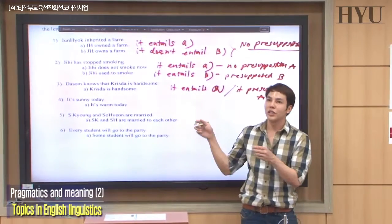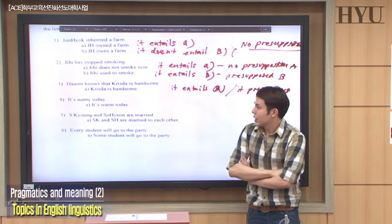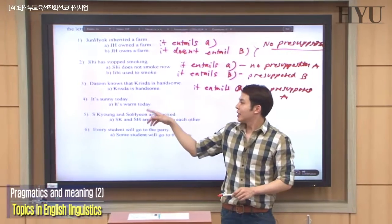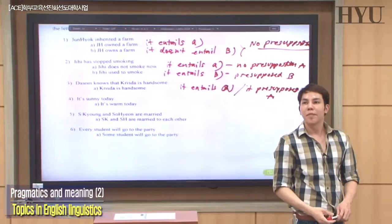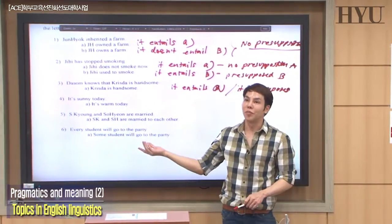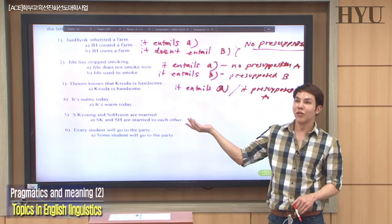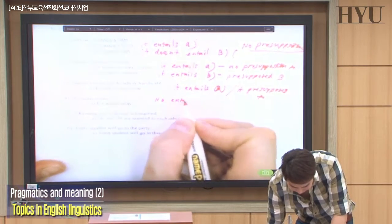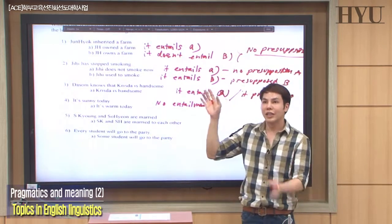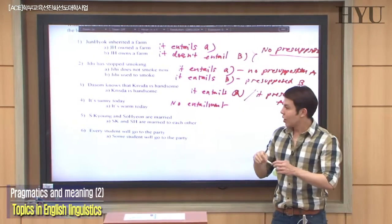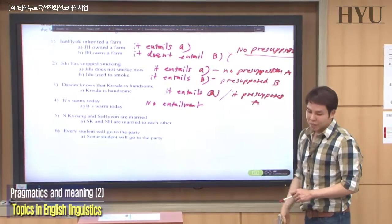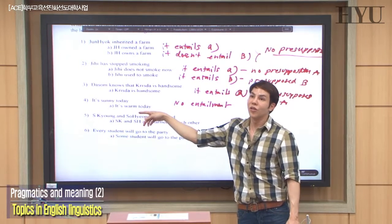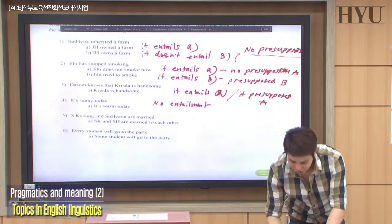Number four: 'It is sunny today.' Does it entail it's warm today? Not necessarily — in the winter in Seoul, for example, it can be sunny but not warm. So no entailment. For presupposition: 'Is it sunny today?' — the speaker is not even sure. So no presupposition either.